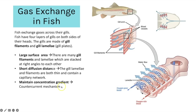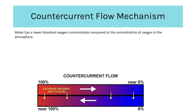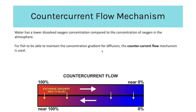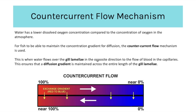Maintaining the concentration gradient links to the counter current flow mechanism. This compensates for the fact that water has a lower dissolved oxygen concentration compared to the atmosphere. To maintain the concentration gradient for diffusion across the entire lamellae and maximise diffusion, water flows over the gill lamellae in the opposite direction to blood flow in the capillaries. Because they flow in opposite directions, an equilibrium in oxygen concentration is never reached, and diffusion can be maintained along the entire gill lamellae.